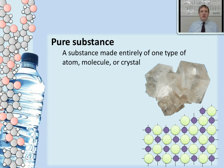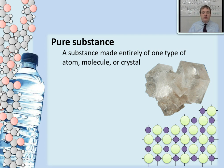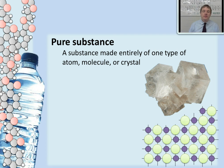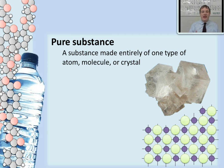Let's look at another example that's maybe not so clearly a pure substance. This is a mineral called halite, and it's actually made up of the same atoms as table salt — sodium and chlorine. Notice that those sodium atoms and chlorine atoms (the sodiums are purple and the chlorines are green) are bonded together in one repeating crystal network throughout. That makes this sodium chloride crystal a pure substance because it's just one type of crystal — one type of building block.